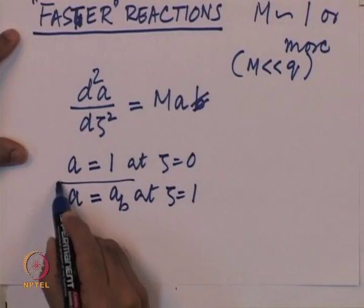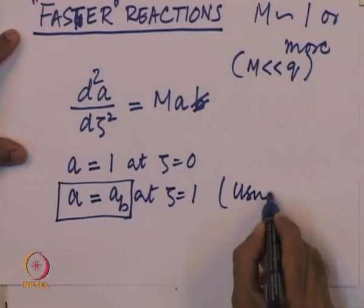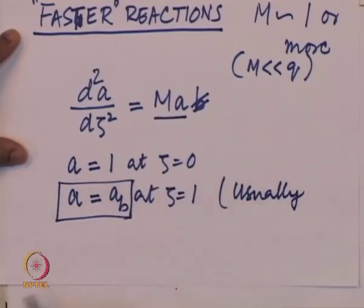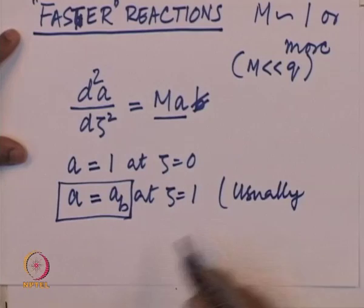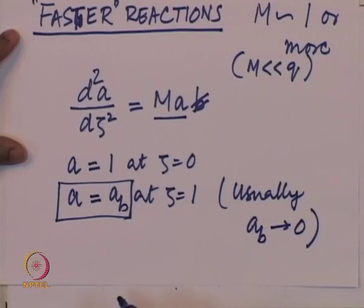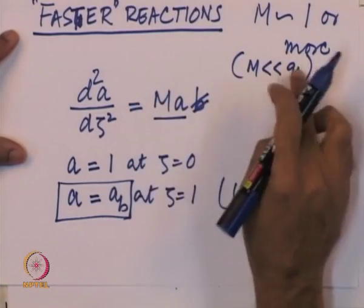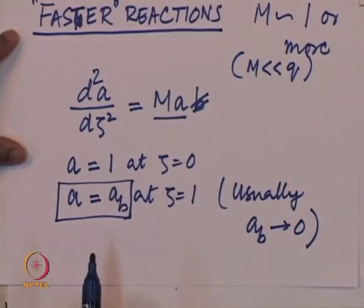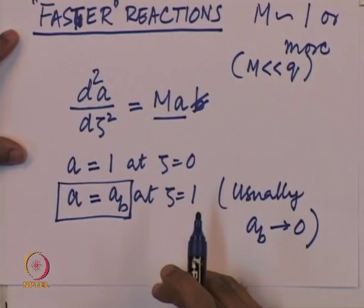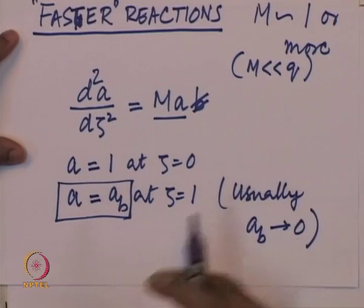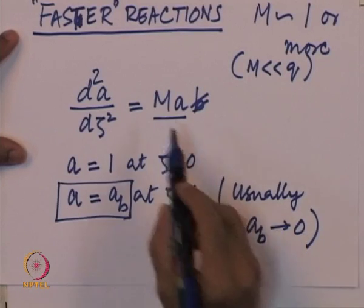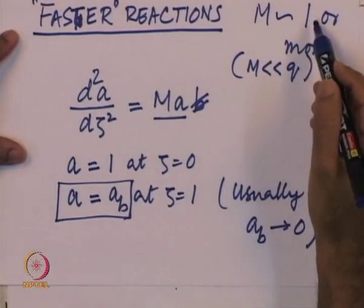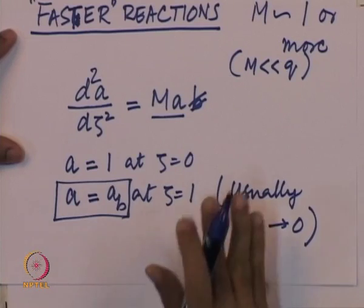A brief comment on the boundary condition: for all practical purposes when the reaction term is non-zero the reaction is already fast enough that A_B is nearly 0. Even when M was very small we encountered the diffusional sub-regime where A_B tends to 0. So when M approaches 1 we are already past the situation where A_B is significant; A_B can usually be replaced by 0. For the moment we solve for general values of A_B and invoke this assumption at the appropriate time.